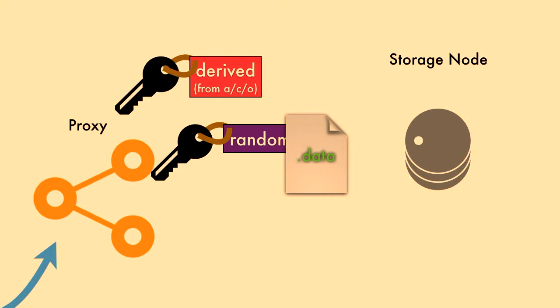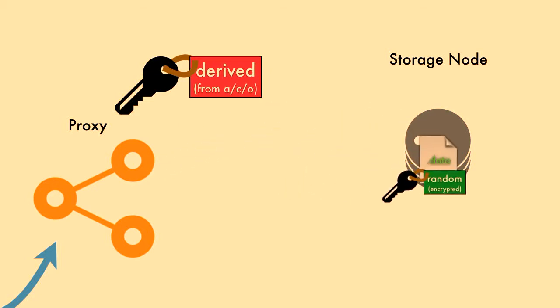Once we've encrypted the data, we encrypt the random key with the derived key, and we send both the encrypted data and the encrypted random key to the storage node. Are there any questions on that process?